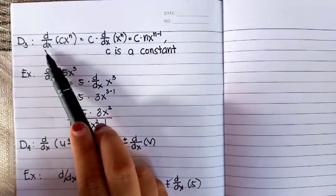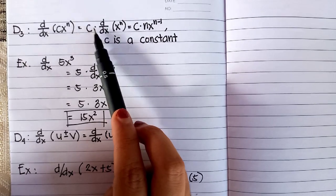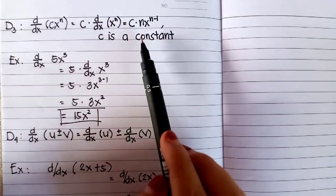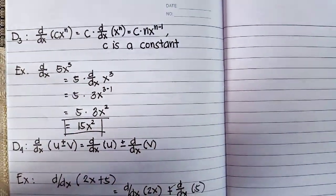D3: d/dx of CX raised to N equals C times d/dx of X raised to N, where C is a constant.